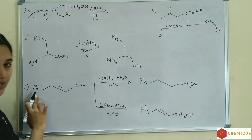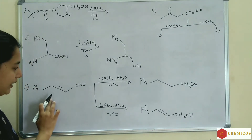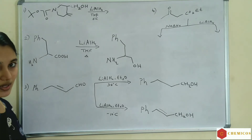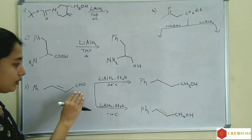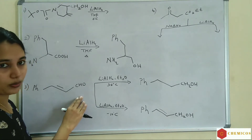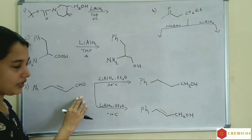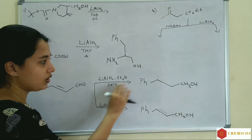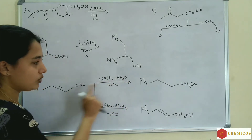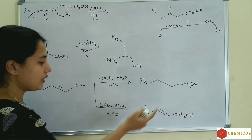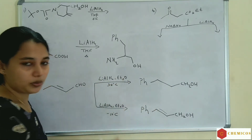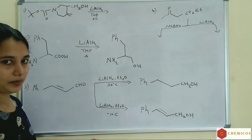So when an alpha, beta-unsaturated carbonyl compound is given: at high temperature the double bond is reduced, and at low temperature the double bond remains safe.